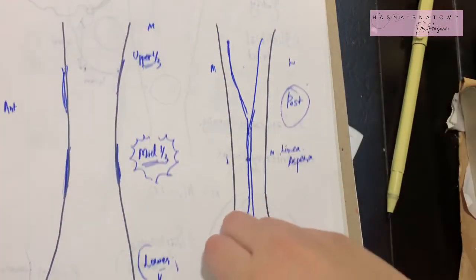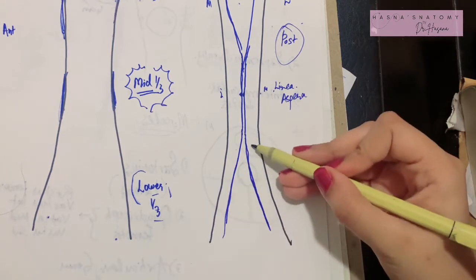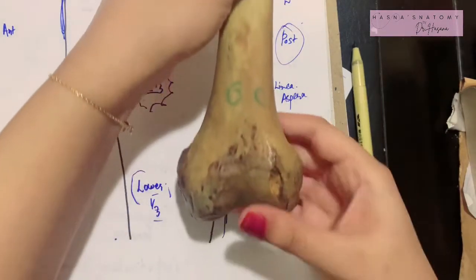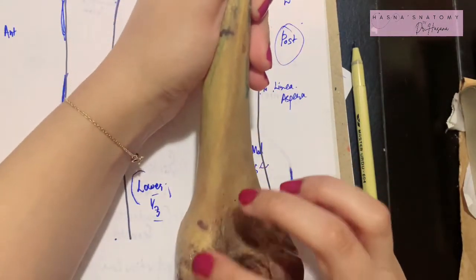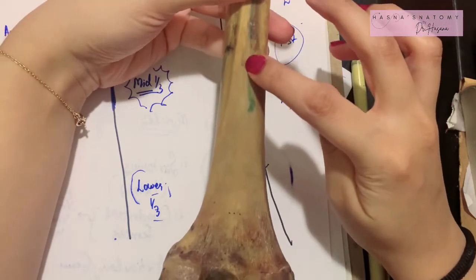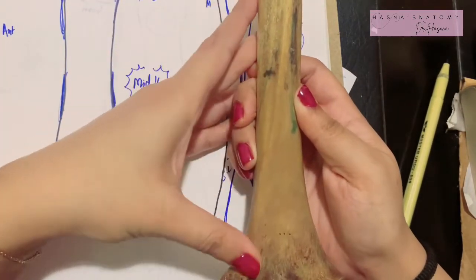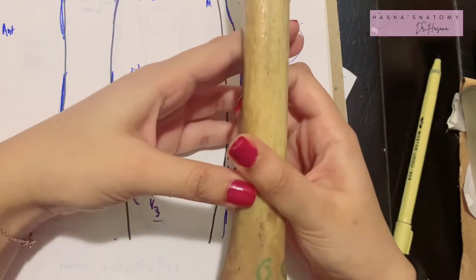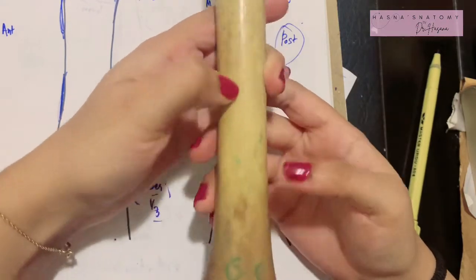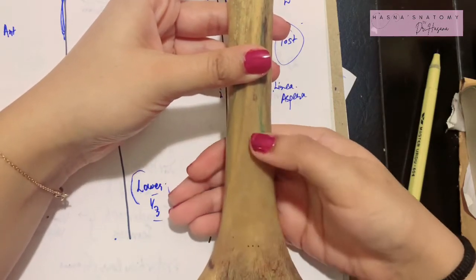Now let's talk about the lower third. Similarly, the linea aspera's medial and lateral lips split up to form the medial and lateral supracondylar lines. The term supracondylar means the prominent ridges or lines above the condyles. The medial lip of the linea aspera extends into the medial supracondylar line, and the lateral lip extends to form the lateral supracondylar line. Overall, the lower third has medial and lateral borders forming an anterior, medial, and lateral surface, along with a posterior surface known as the popliteal surface, as the popliteal fossa's floor is formed here.